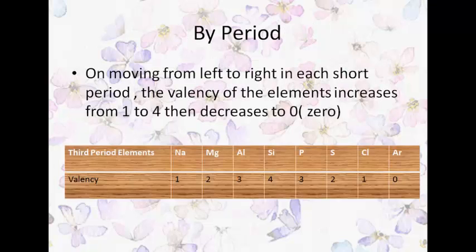First, let's understand valency with respect to periods. Moving from left to right in a short period, the valency of elements increases from one to four and then decreases to zero. Using the third period as an example — sodium, magnesium, aluminium, silicon, phosphorus, sulfur, chlorine, and argon — their valencies are 1, 2, 3, 4, 3, 2, 1, and 0 respectively.